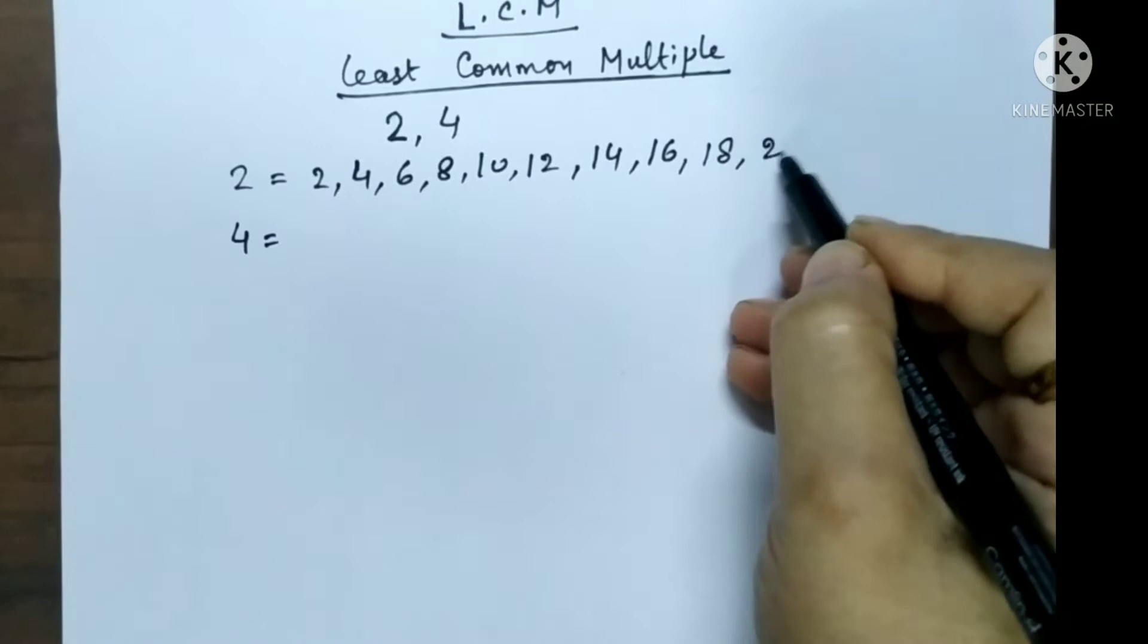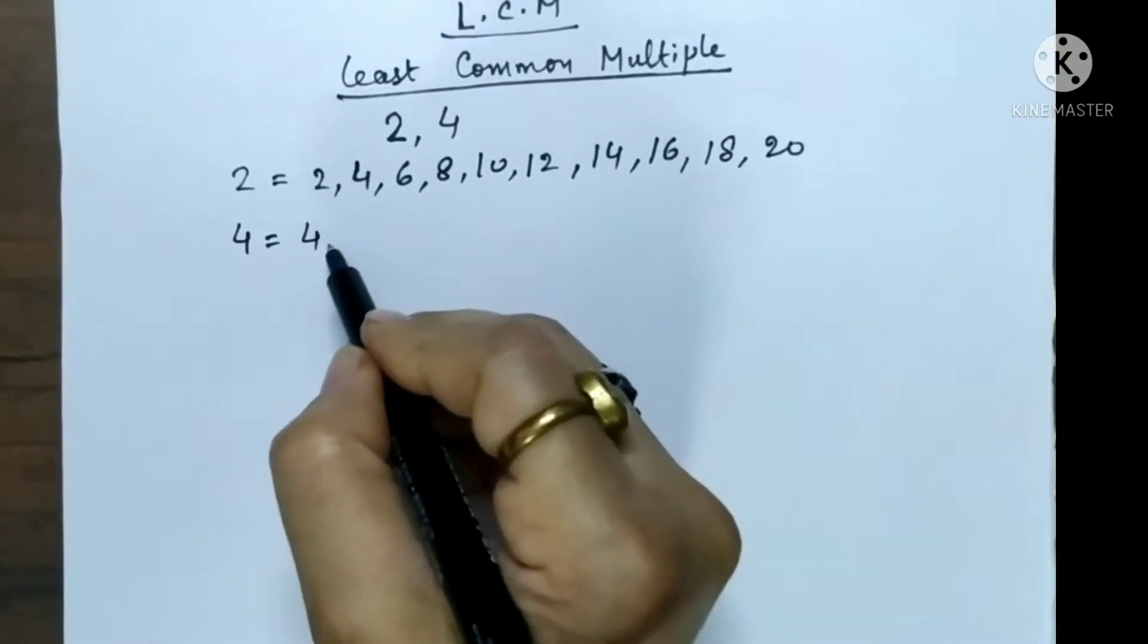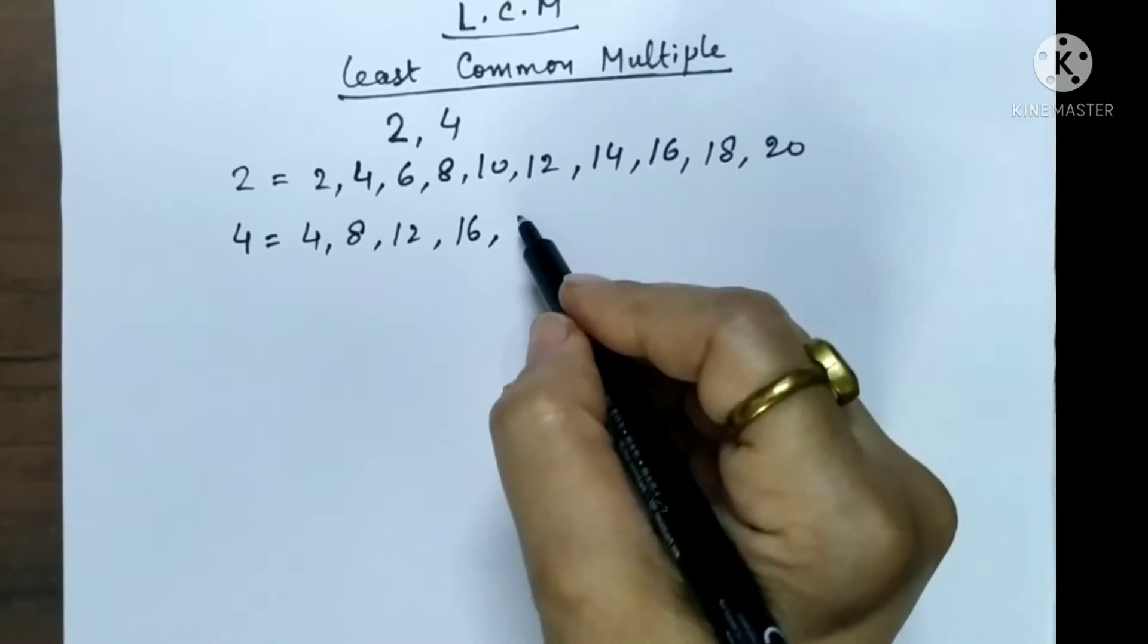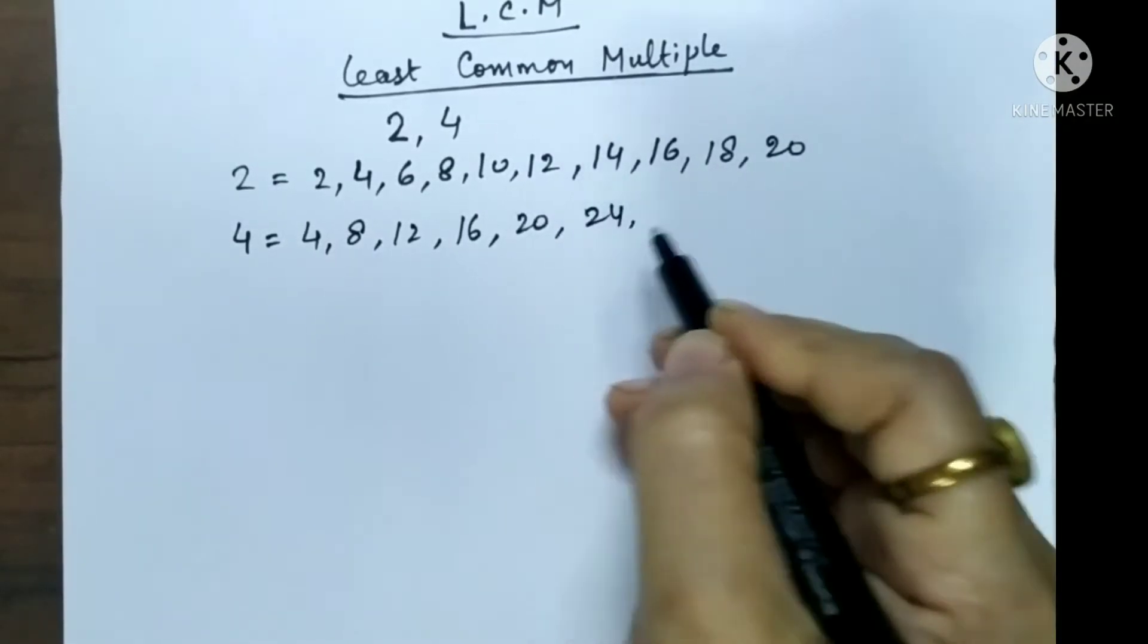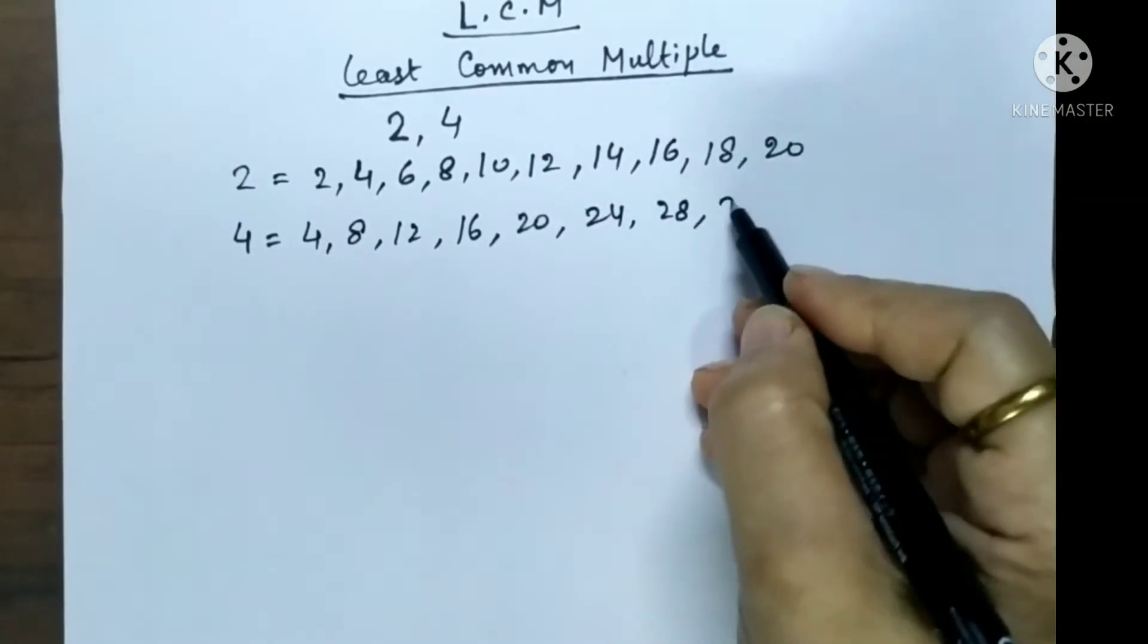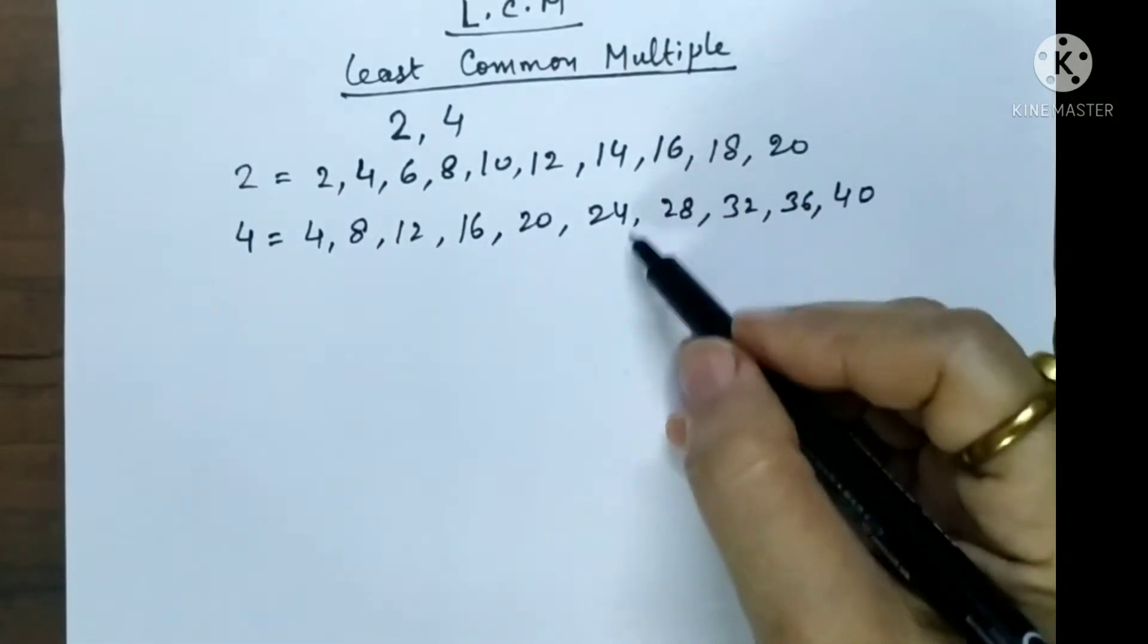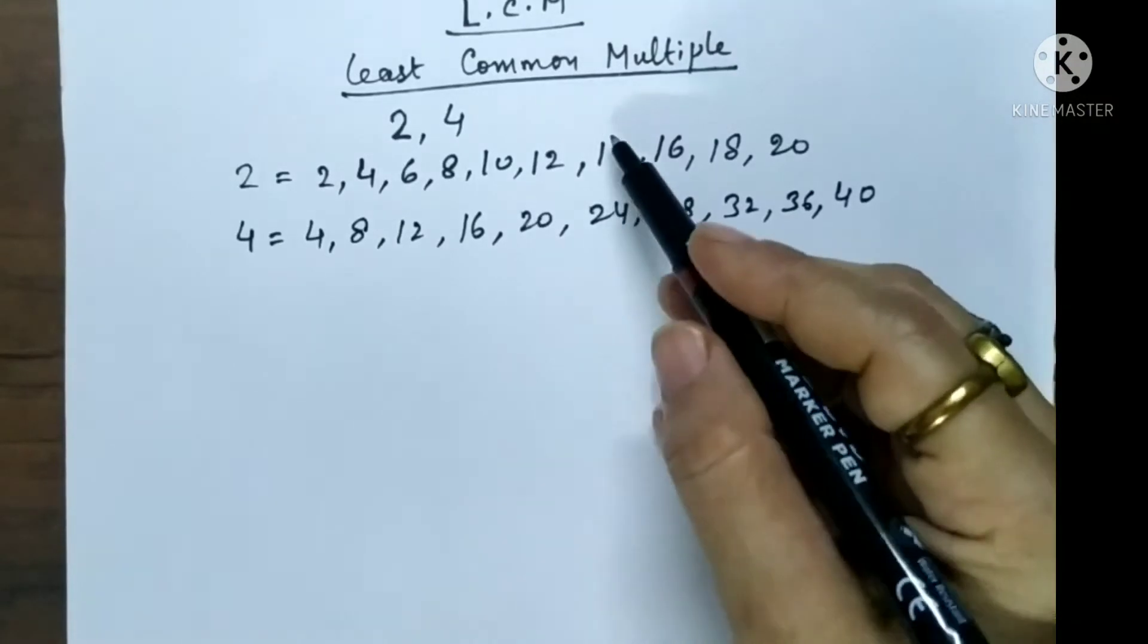2 nines are 18 and 2 tens are 20. 4 ones are 4, 4 twos are 8, 4 threes are 12, 4 fours are 16, 4 fives are 20, 4 sixes are 24, 4 sevens are 28, 4 eights are 32, 4 nines are 36 and 4 tens are 40. So in this way we have written the tables.